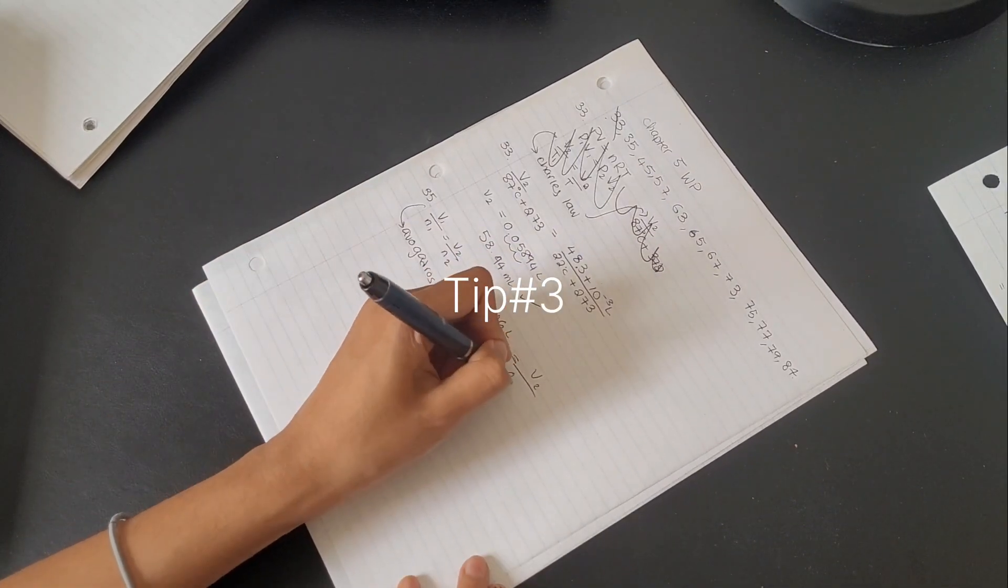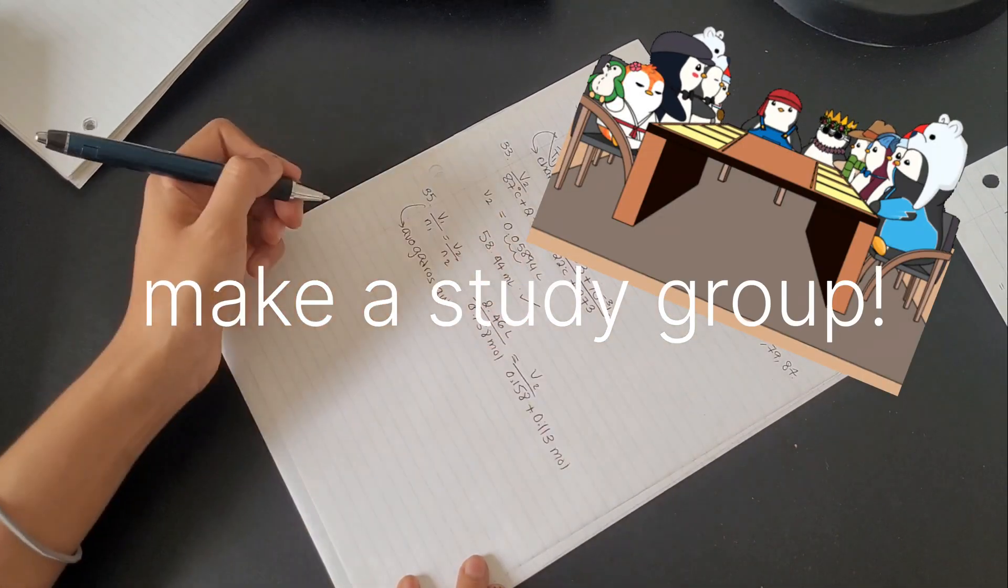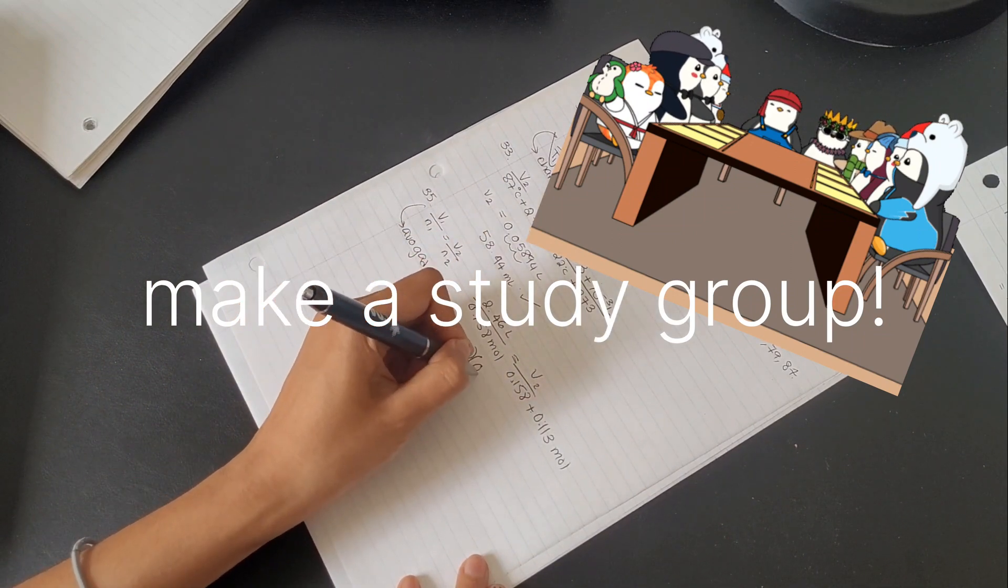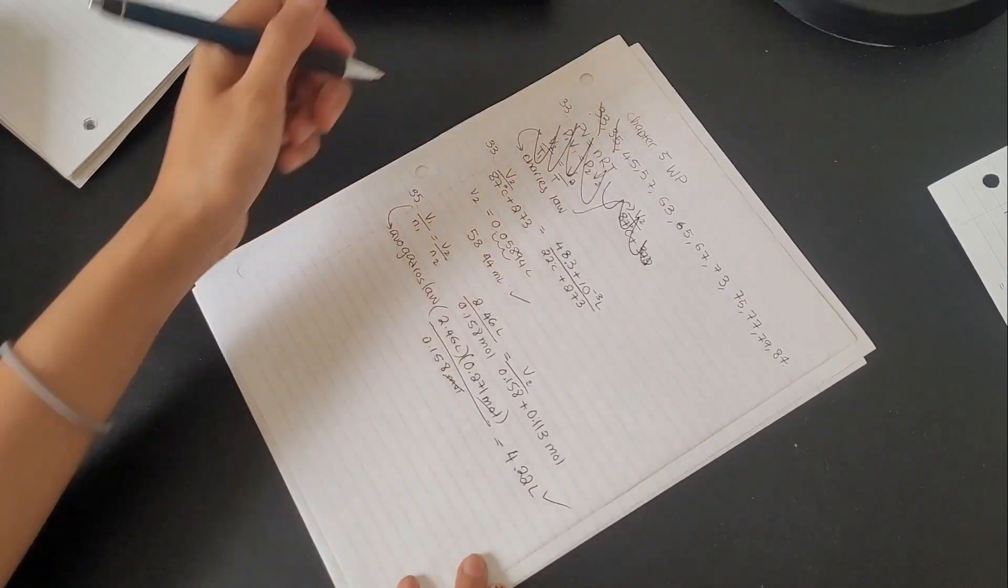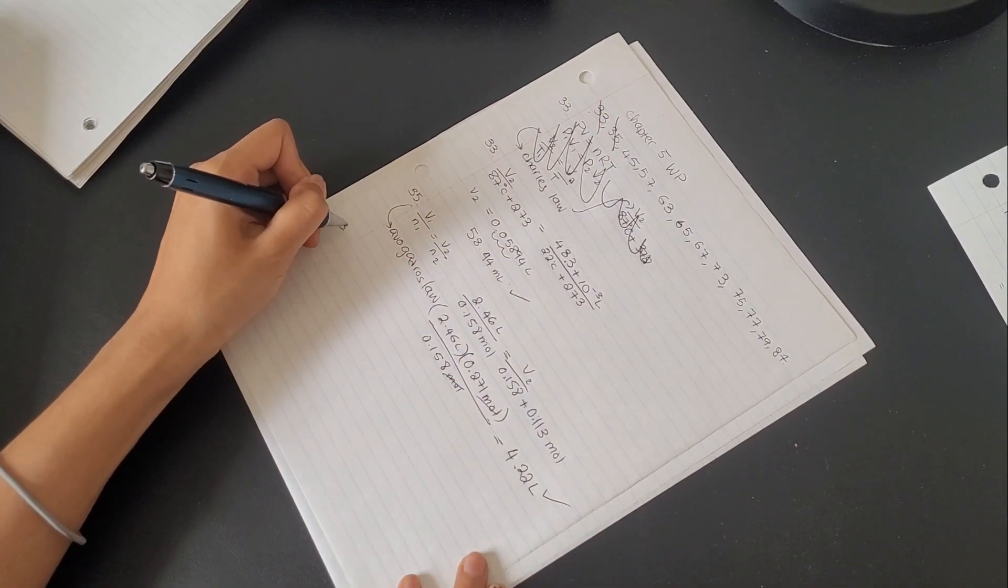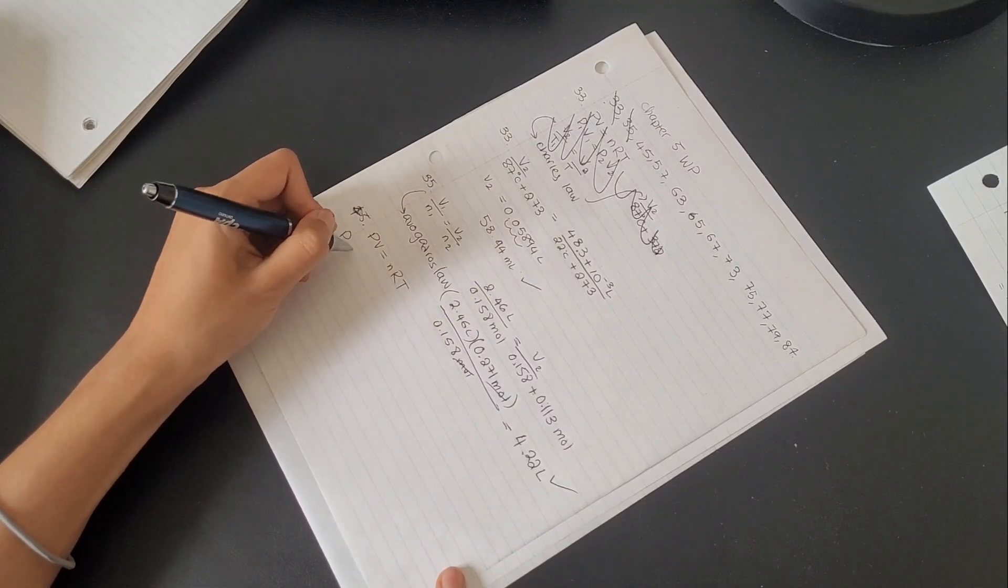Tip number three is creating a study group and attending office hours. At least have one meeting with your friends or your study group before you go to the exam. This way you can bounce off material that you and your friends studied in case you missed something that they caught on to.